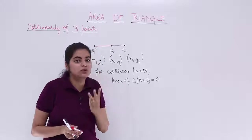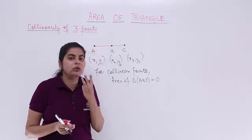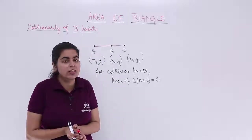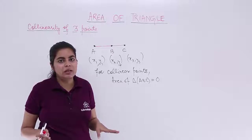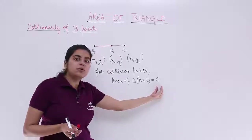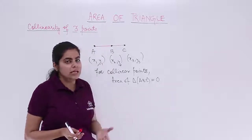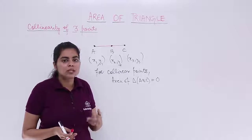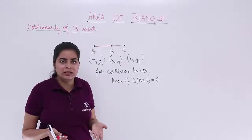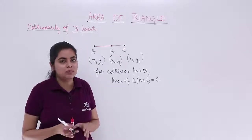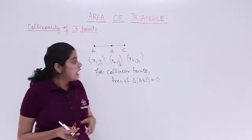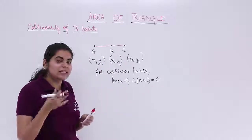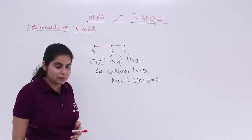That means if you have been given three points and you have to check whether those points are collinear or not, just find out the area. If the area comes out to be 0, yes they are collinear. If it is not 0 but some value, then they are not collinear. Now let's see a numerical problem on this concept.